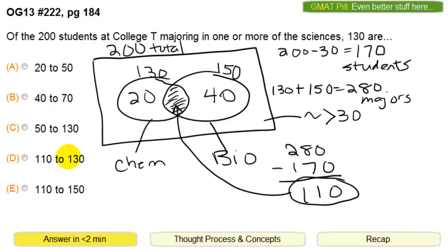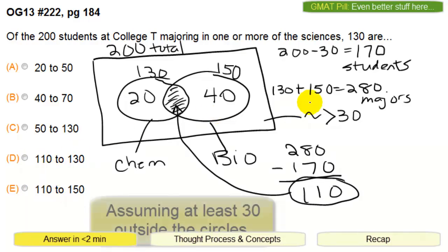So that gets us to either 110 to 130, which is D, or 110 to 150, which is E. So 110, and that's assuming that at least 30 people are on the outside, like they're not majoring in either of these guys.